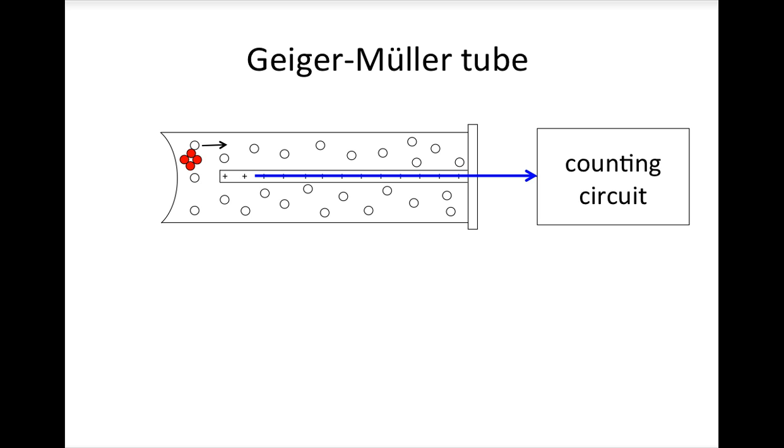These readings fluctuate because decay is probabilistic. Sometimes you get a bunch coming out at once and sometimes there's not very many. It's just like rolling dice—sometimes you get a lot of sixes or ones when you roll a bunch of dice, and sometimes there aren't any ones that show up.